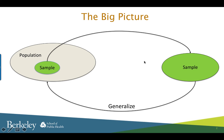Before we start, I want you to conceptualize this big picture and imprint it in your mind. You have your population on the left, from which we take a sample, and then we study a sample and generalize the results from the sample back to the population. Our entire lecture is really going to be about what we could do to get a result from the sample that is applicable to the larger population we are interested in.